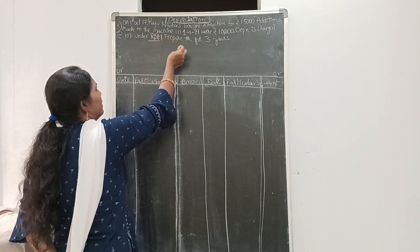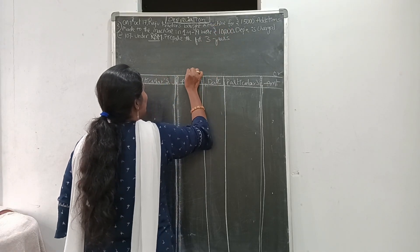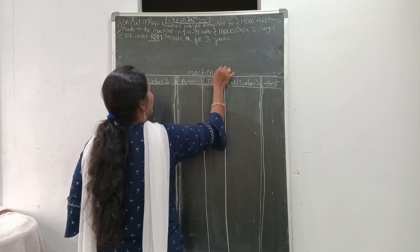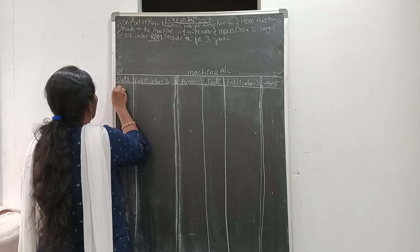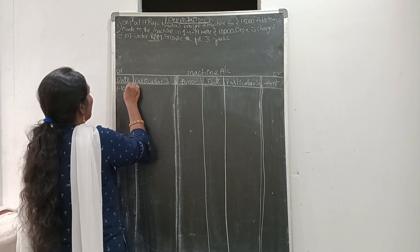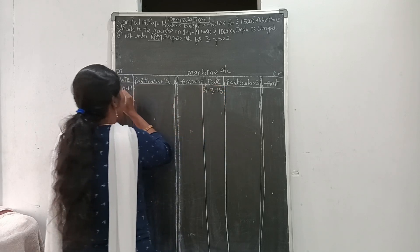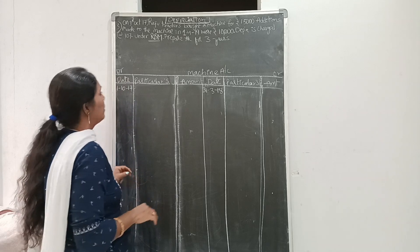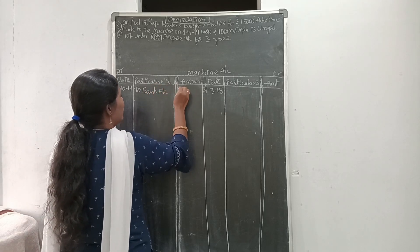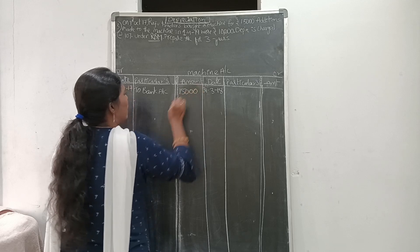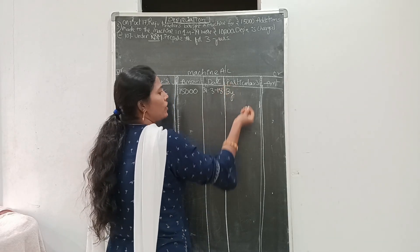We are going to prepare a Machine Account. First, put the heading: Machine Account. The first machine is purchased on 1st October. The cost of the machine is debited to the bank account — 15,000. On the credit side, we have the depreciation account. Now let's calculate the first year depreciation. Always remember: cost of the machine is on the debit side, and depreciation is on the credit side.